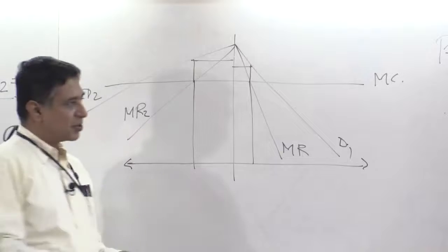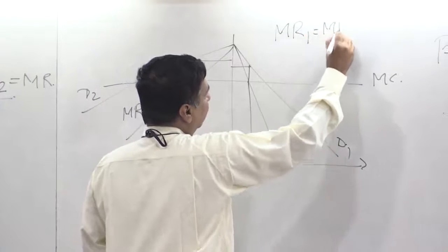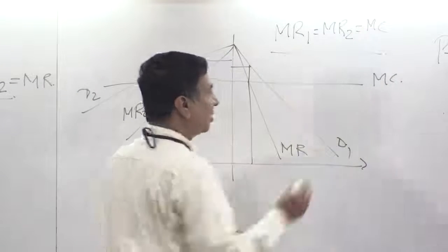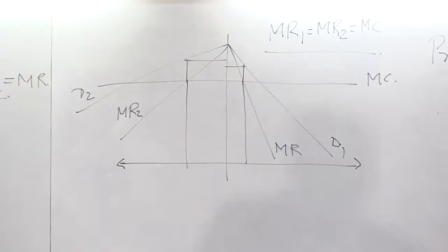So in this diagram, marginal revenue 1 is equal to marginal revenue 2 equal to marginal cost. Actually this diagram is wrong. Why? Can you tell me why it is wrong?